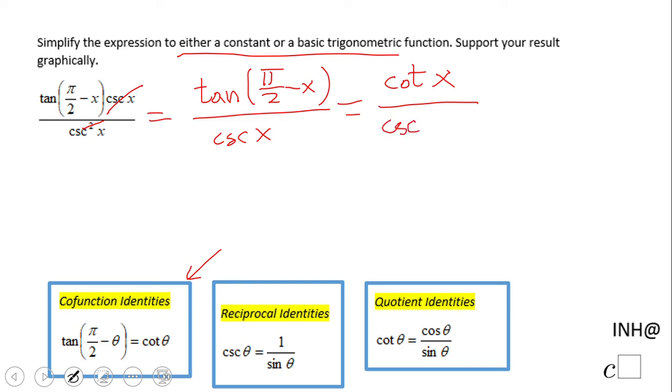Now we're going to use the reciprocal identity and we're going to get cotangent is cosine of x over sine of x.